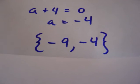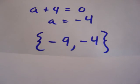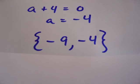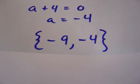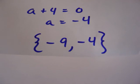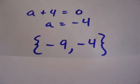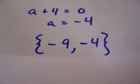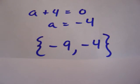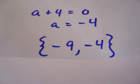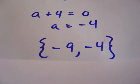Here they are written as a set: negative 9, negative 4. If you replace either of those two numbers into a, you will get zero equals zero, making it a true statement. This is part one — please stay tuned for part two of the factoring to solve equations tutorial.